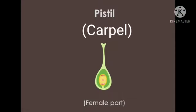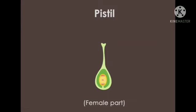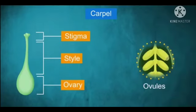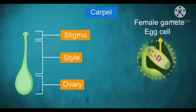Second, pistil or carpel. It is the female reproductive part of the flower. It is broader at the base and tapers at the top. The lower broader portion is the ovary. The ovary contains ovules which produce eggs, or female gametes.